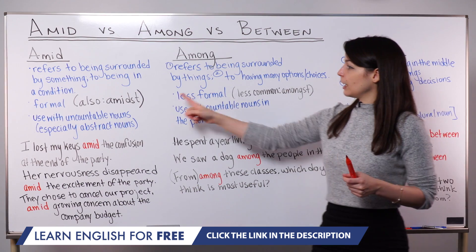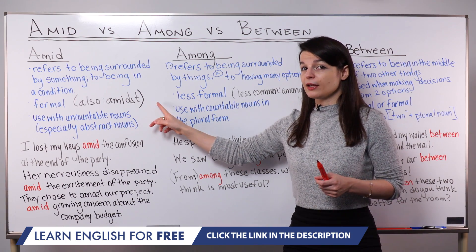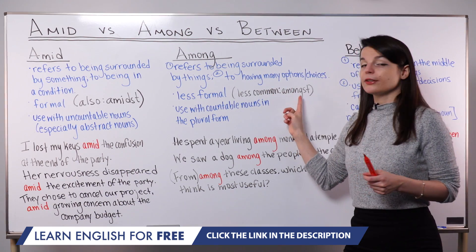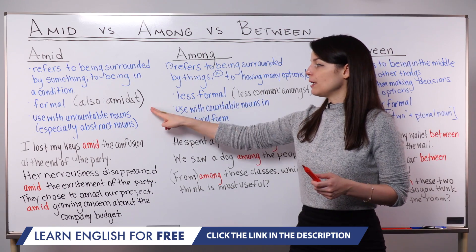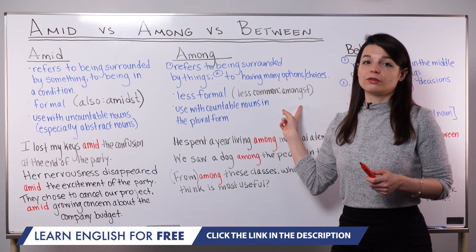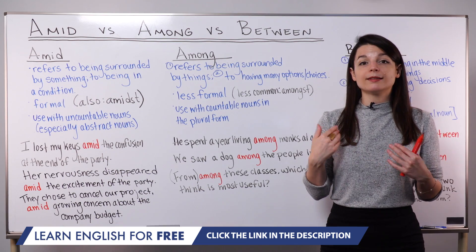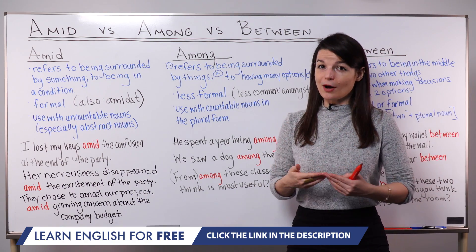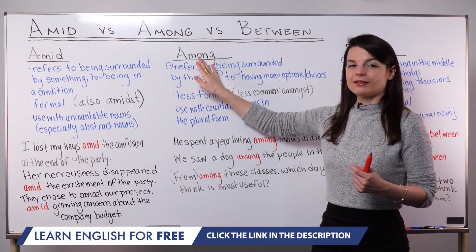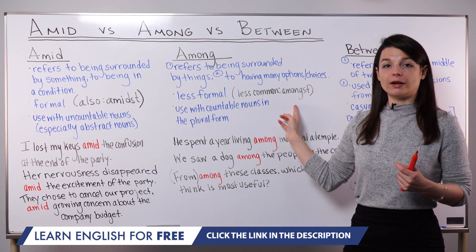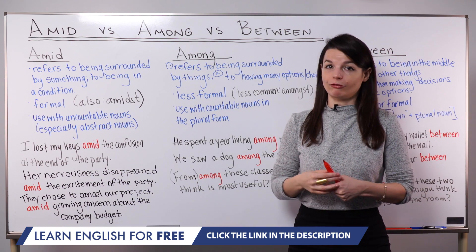Like amid has amidst, among also has an old-fashioned form — amongst. Just like with amidst, this word is not used very much and can sound quite old-fashioned. It will sound more like contemporary, modern, regular English today if you use among. You may see amongst from time to time, but it has an older feel about it.